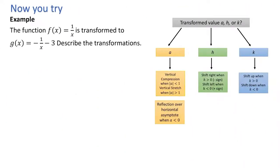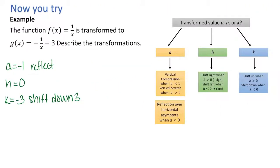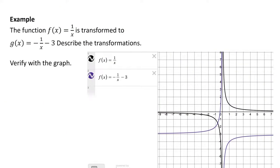Go ahead and pause the video and try this example on your own. The value of a is negative 1, so that creates a reflection. h is 0, so there is no shift left or right. k is negative 3, so we have a shift down. When we graph both functions, you can see we do have a shift down and a reflection.